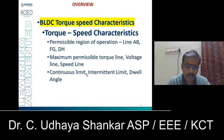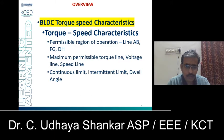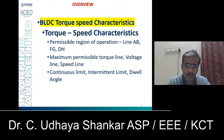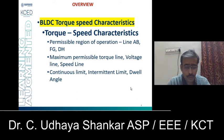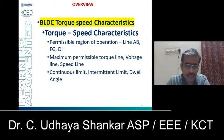The overview of the presentation is: we will be discussing about the Torque Speed Characteristics of the BLDC machine. As you all know, in earlier sessions we derived the expression for torque. Now we will discuss in detail the different permissible regions of operation, the maximum permissible torque line, the maximum permissible voltage line, the maximum permissible speed line, the continuous limit, the intermittent limit, and the impact of dwell angle on the Torque Speed Characteristics of the BLDC machine.